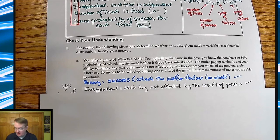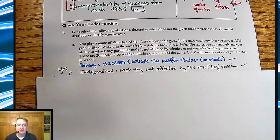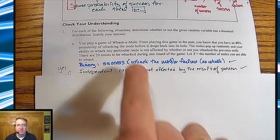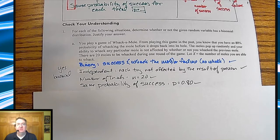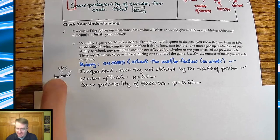It is independent. Each try is not affected by the results of the previous. They spell that out pretty clearly. The number of trials is fixed, it's 20. And then your same probability for success, you only have an 80% chance of making it. So that falls into yes, binomial.